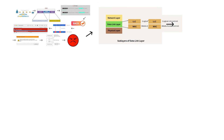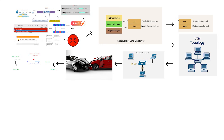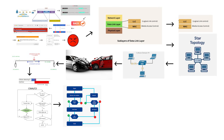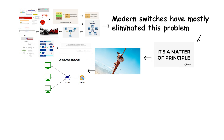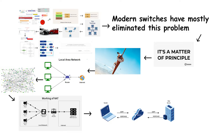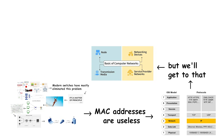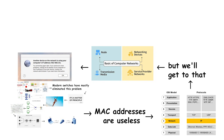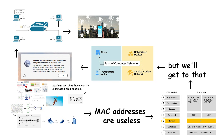The data link layer also controls how devices access the network media — this is called media access control. On a shared network like old-school Ethernet hubs, multiple devices might try to transmit at the same time, which causes collisions. The data link layer has protocols like CSMA/CD that detect these collisions and tell devices to wait random amounts of time before trying again. Modern switches have mostly eliminated this problem. Now, here's where Level 2 people still fall short: they understand local network communication, but have no idea how data moves between different networks. MAC addresses only work on your local network. If you want to send data across the internet to a server in another country, MAC addresses are useless.